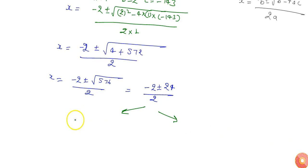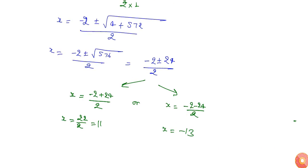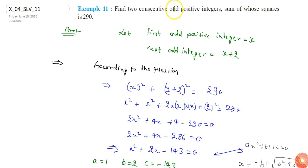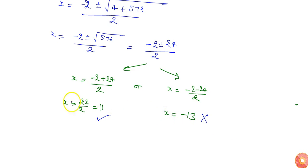There are two cases: x equals (minus 2 plus 24) divided by 2, giving 22 divided by 2, which is 11; or x equals (minus 2 minus 24) divided by 2, giving minus 13. Since the question states both integers must be positive, I consider only x equals 11 and reject x equals minus 13.